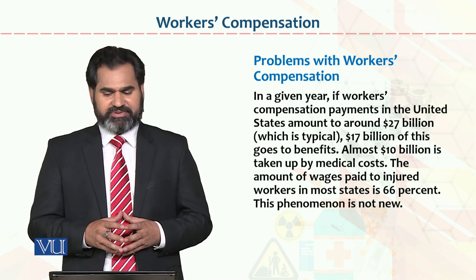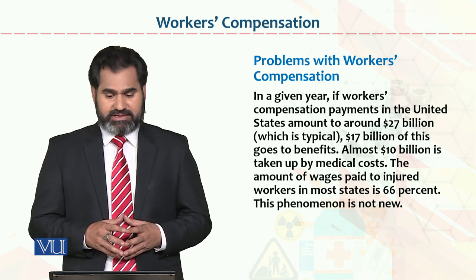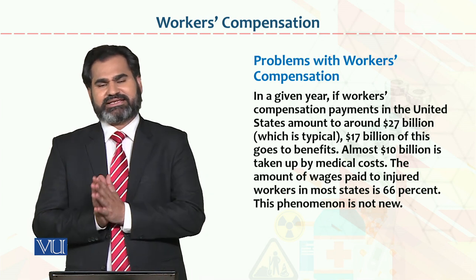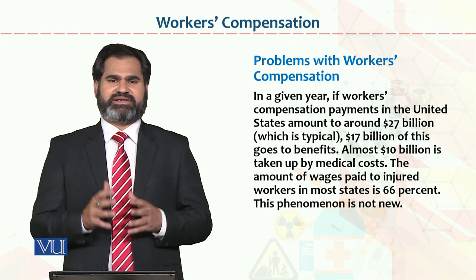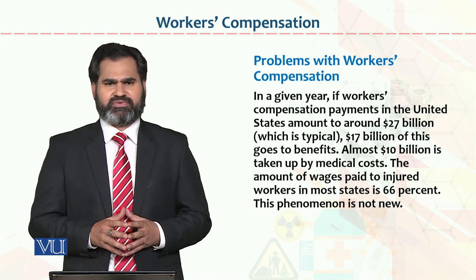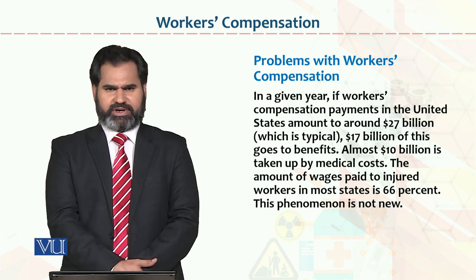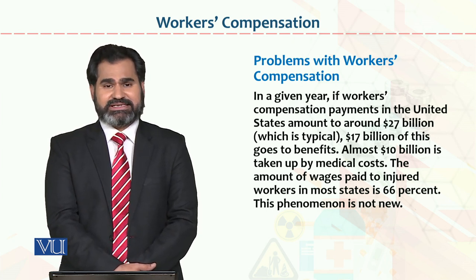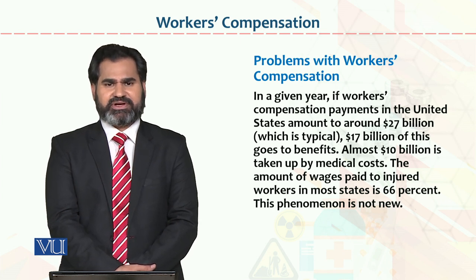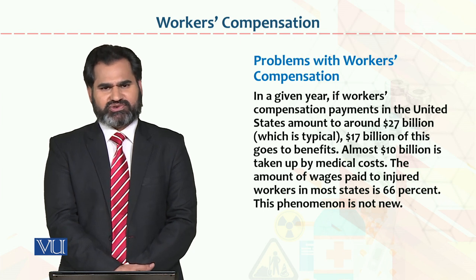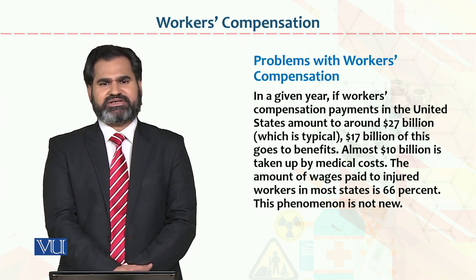In a given year, if workers' compensation payments in the United States amount to around 27 billion dollars, which is typical, 17 billion of this goes to benefits. If it stays at 17 billion that is acceptable, but 27 billion is on the higher side and needs to be reduced. Workers' compensation is a right of the employee — he or she must be compensated by the employer or insurance company. With proper laws, legislation, and implementation, organizations can handle these things more easily.